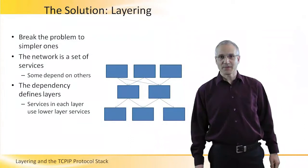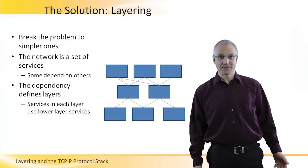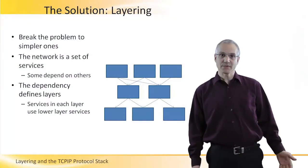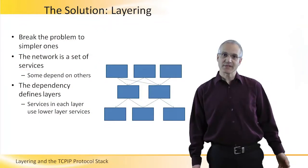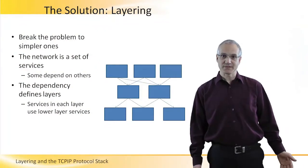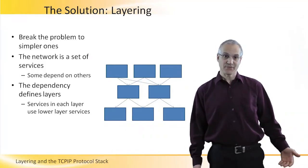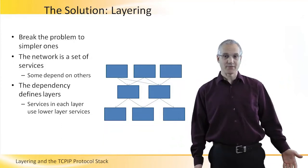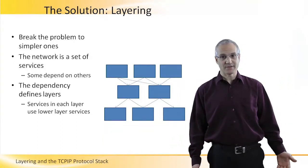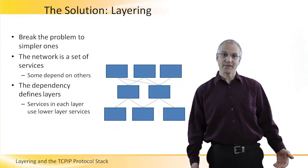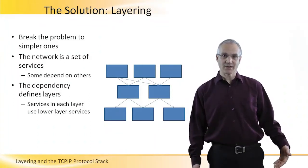Breaking the problem into simpler ones is the solution. To do this, we look at the network as providing a set of services. Some of these services are independent, some are dependent on other ones. These form a set of layering, where on the lowest layer we have the services that don't depend on any other services, and then we gradually build the layers until we get the full service set of a network.